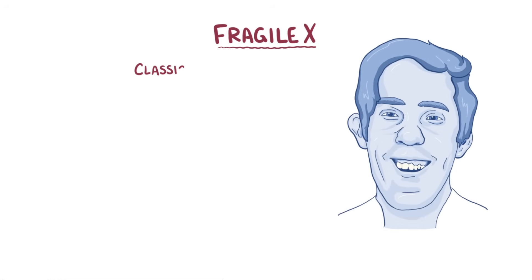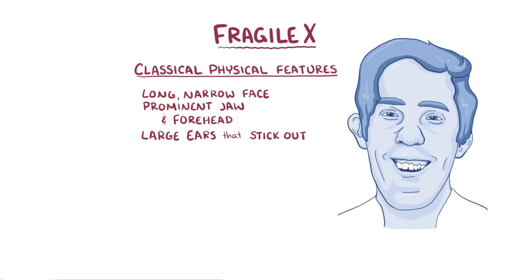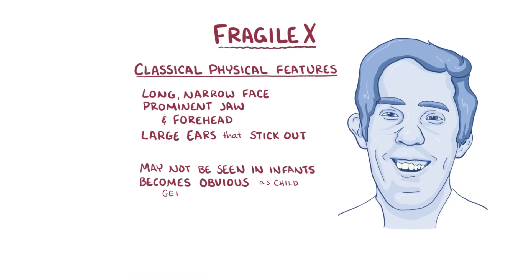Individuals with Fragile X syndrome can develop classic physical features as well, like a long and narrow face, a prominent jaw and forehead, and large ears that stick out. These facial features might not be seen in an infant, but become obvious as the child becomes older.